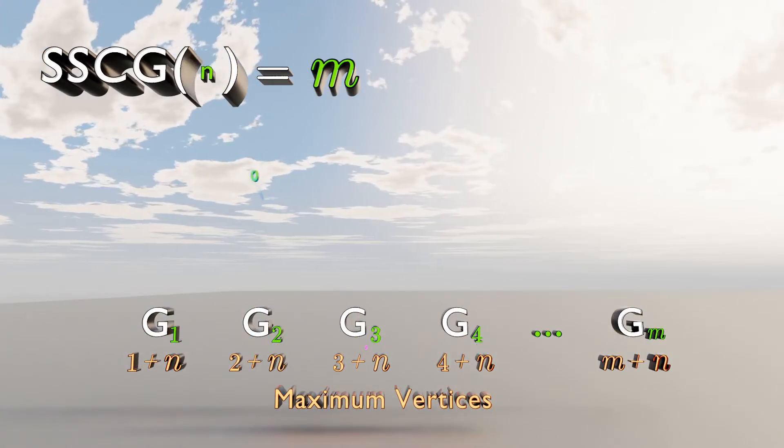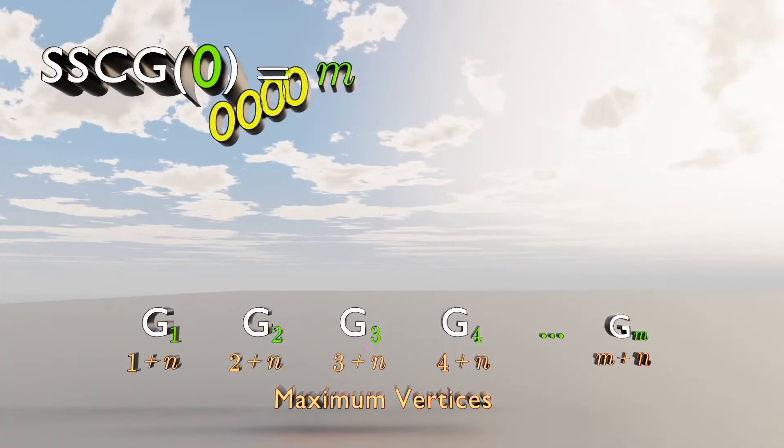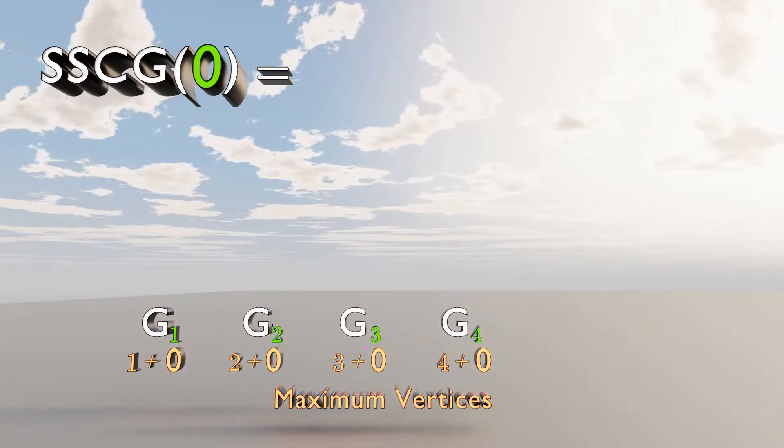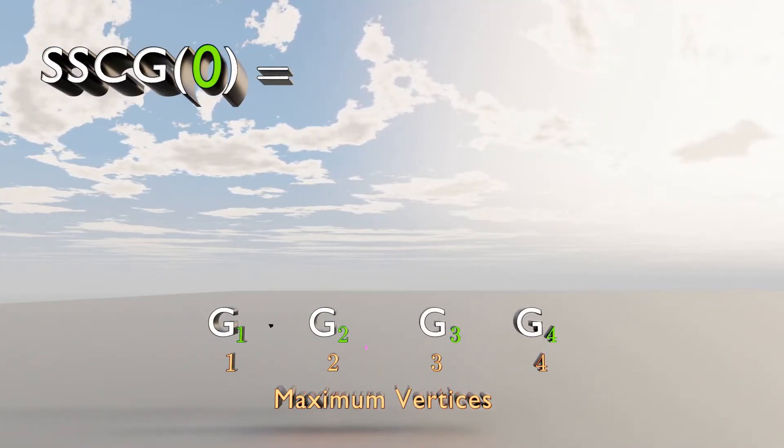Let's try SSCG0. Each one of these graphs can have a maximum of 0 vertices. Okay, let's try plotting the graphs of SSCG0.